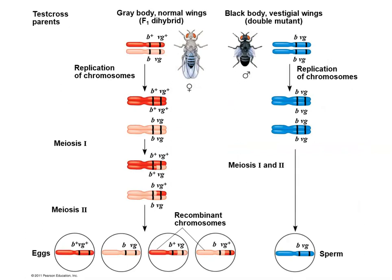Looking at the two fruit flies — the F1 dihybrid and the double mutant — as they go through meiosis, the sperm from the double mutant can only produce one chromosome combination since it is homozygous recessive, no matter how much crossing over takes place. The F1 dihybrid, however, has different alleles on both chromosomes. Crossing over can take place in prophase I, so parental chromosomes can be passed on intact, or recombinant chromosomes can be passed on to future offspring.